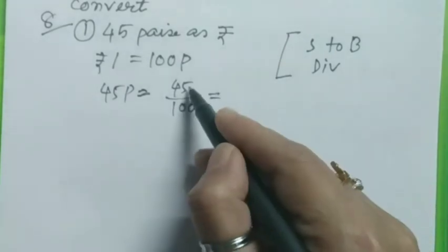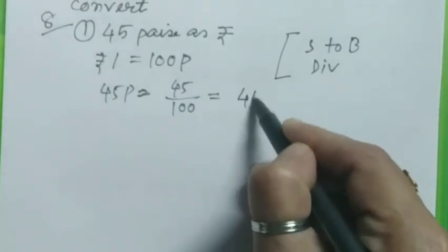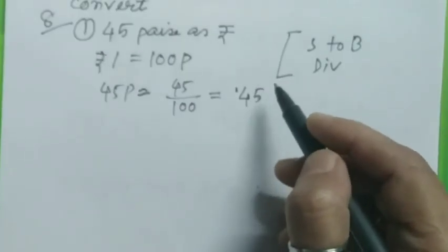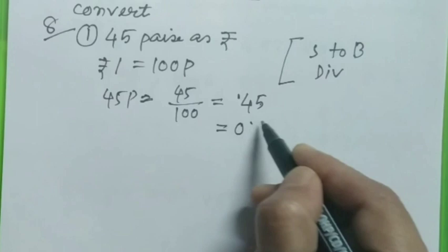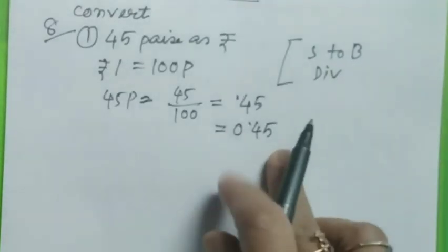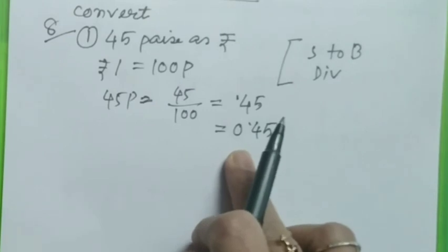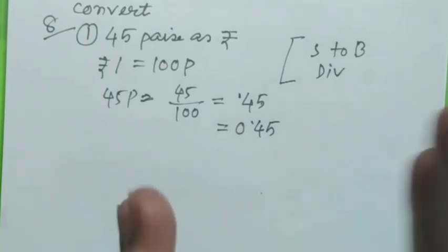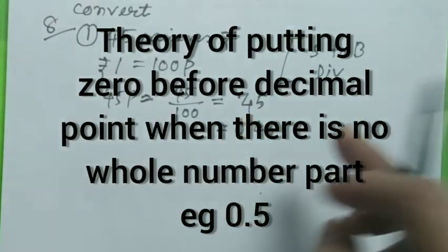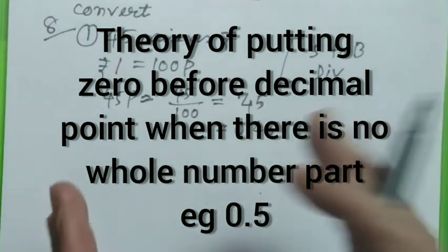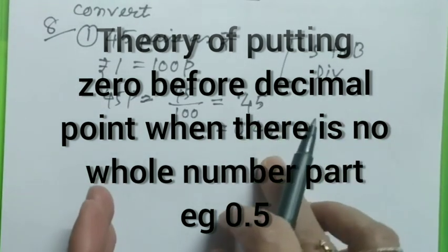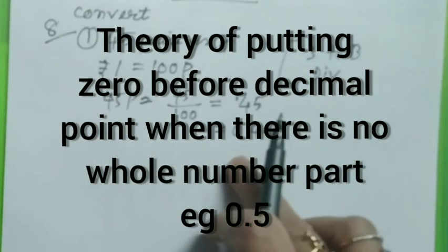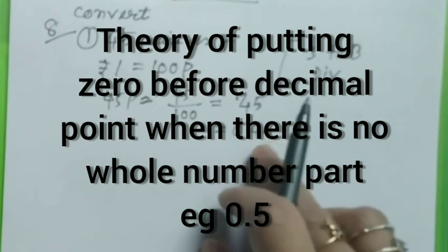This will equal how much? Here two zeros are there, so we will put our decimal point before two digits starting from the rightmost digit. 45: 1, 2 - here will be our decimal point. This will equal 0.45.